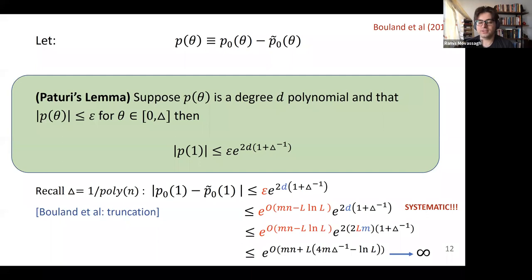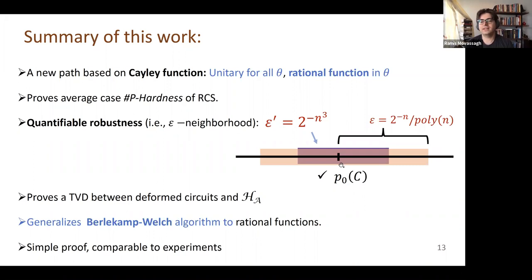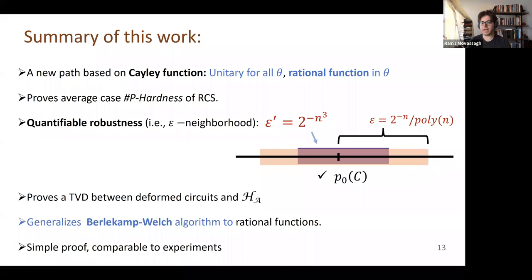Today I will give you a new path not based on Taylor series—it's based on the Cayley path, as the title suggests. I'll give you a path that is unitary everywhere for all theta—zero, one, sqrt(pi), pi, fifteen—it's a unitary path. The compromise is that instead of polynomials we'll have rational functions (ratio of polynomials). But they are of the lowest degree possible. I don't think you can get an improvement as far as algebraic functions are concerned because the degrees are as low as you can hope.